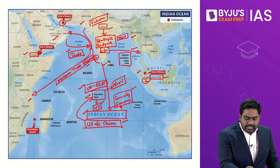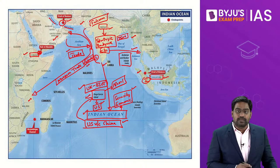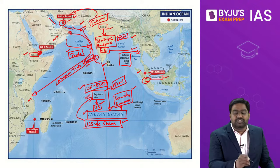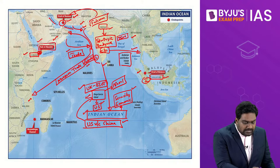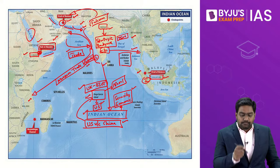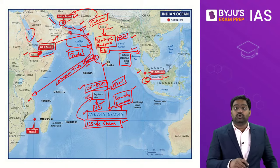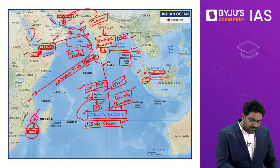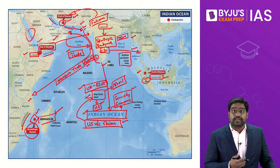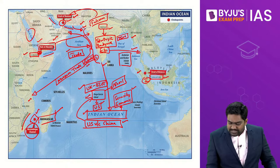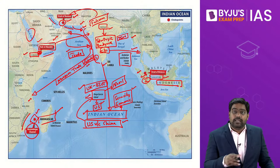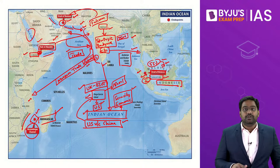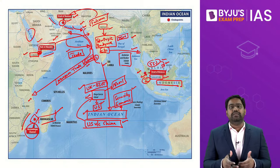Key choke points include the Strait of Hormuz between the Persian Gulf and the Gulf of Oman, from which most of India's oil imports come, making our energy security heavily dependent on it. Then there is the Bab-el-Mandeb Strait connecting the Red Sea with the Gulf of Aden, critical for India to connect with Europe and the Atlantic. The Mozambique Channel in East Africa, sandwiched between Mozambique and Madagascar, is another important shipping lane. The Strait of Malacca, sandwiched between Indonesia and Singapore, is crucial for the global economy — nearly 55% of India's trade passes through it.